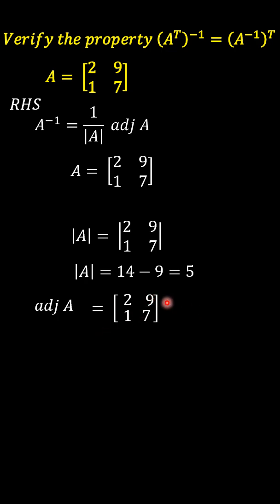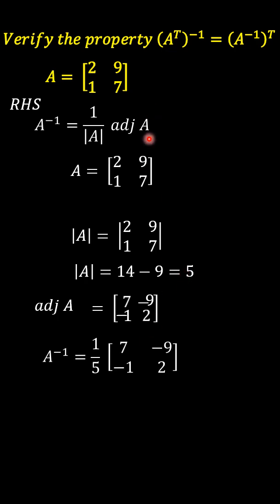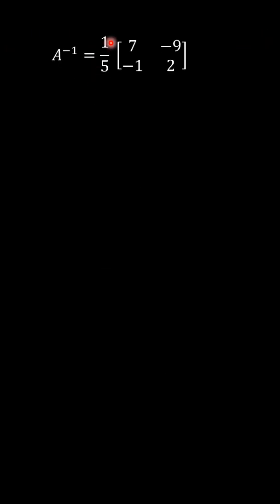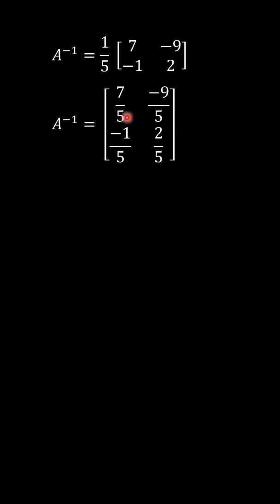Here positive 9, so we have to change to minus 9 and minus 1. Next, we have to interchange the diagonal elements so that we get the adjoint of A. Now we have the adjoint of A and the determinant of A. Substituting these two values into the equation, we get the A inverse matrix. Multiplying these elements by 1 over 5, we get this result.